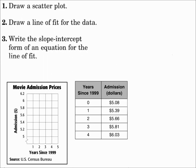We have a table with years since 1999 and admission dollars to a movie. We're going to make a scatter plot and write the slope-intercept form of the equation for the line of fit. Start by drawing the scatter plot: the point (0, $5.08) is plotted, then (1, $5.39), (2, $5.66), (3, $5.81), and (4, $6.03). Always start by drawing the scatter plot.